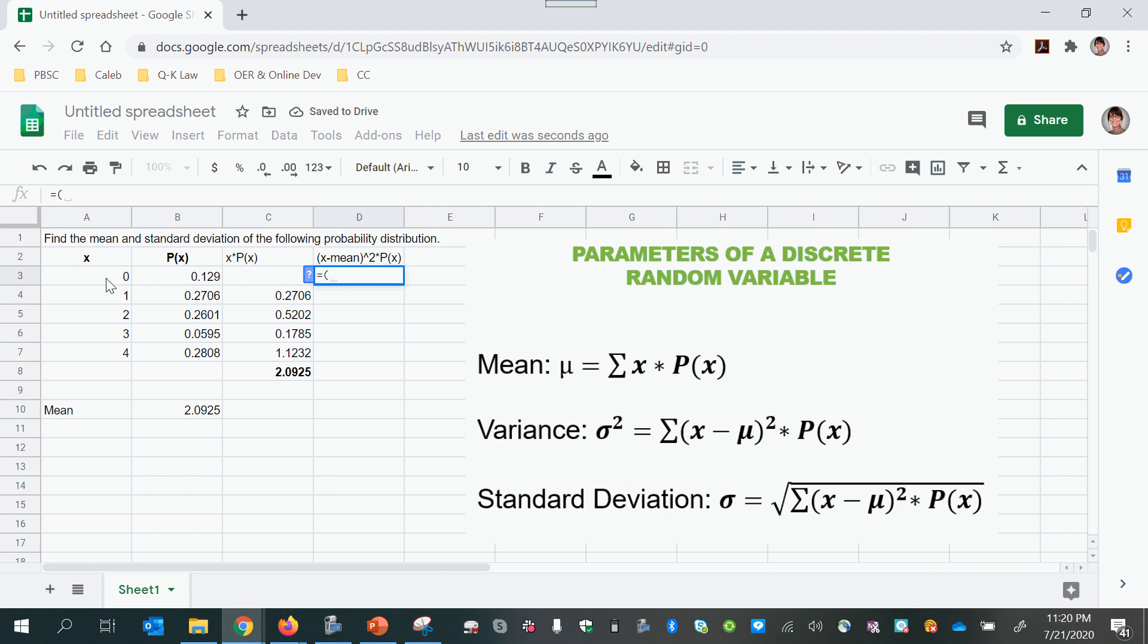Equals for the first one x minus the mean, and I'm going to make that an absolute reference by pressing the f4 key and close parentheses, raise it to the power of 2 and multiply times the probability of x corresponding to the x value of 0.